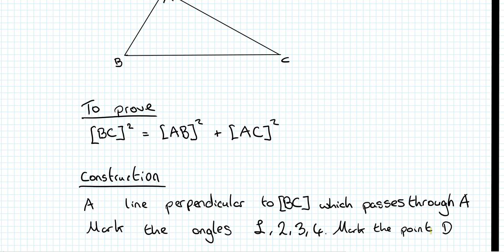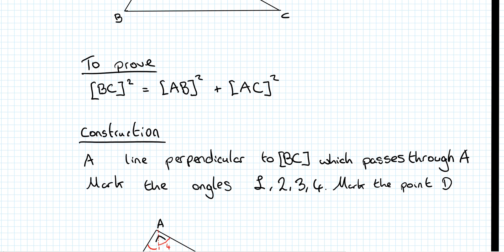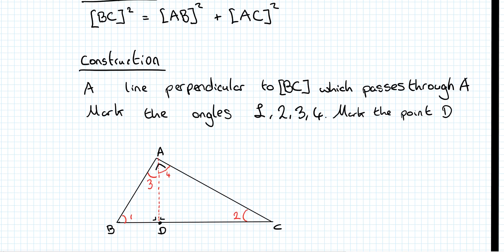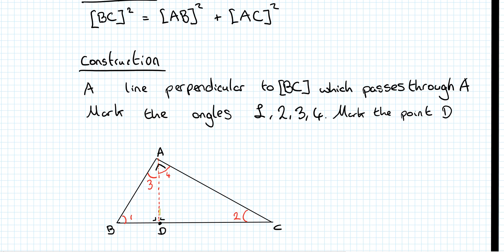Our construction is a line through the point A perpendicular to BC. It's useful to mark this intersection point as D. Since AD is perpendicular to BC, we can mark in two right angles, and we label our angles one, two, three, and four.